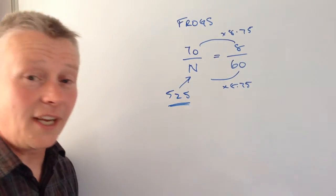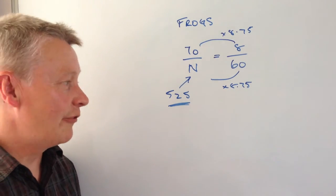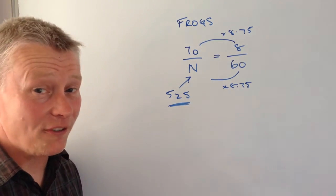So what we're saying is the original population must have been 525 frogs.